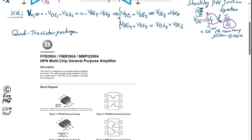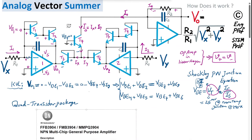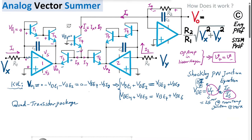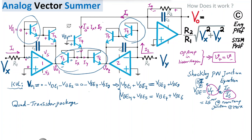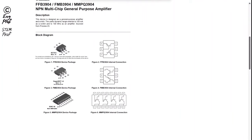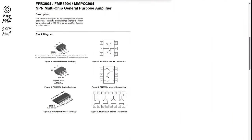If limited to quad packages, one arrangement is to place transistors T1, T2, T3, and T6 together in the first (green) package, and T4, T5, and T7 together in the second (blue) package, using two such quad packages total.